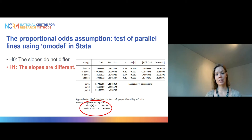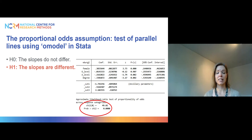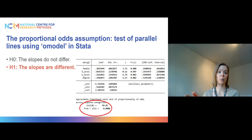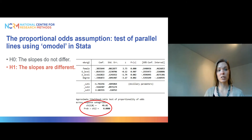In terms of examples, I'm continuing to use the same example as in the second video, so I'm not going to go through that in a lot of detail. We're still interested in how gender and education are associated with how worried people are about their homes being broken into. Our outcome has four ordered categories ranging from one, not at all worried, to four, very worried.